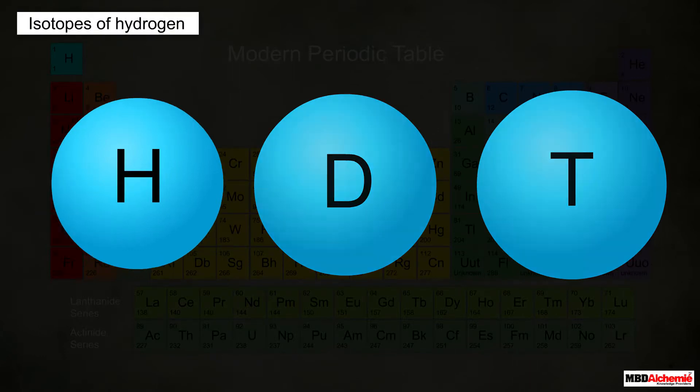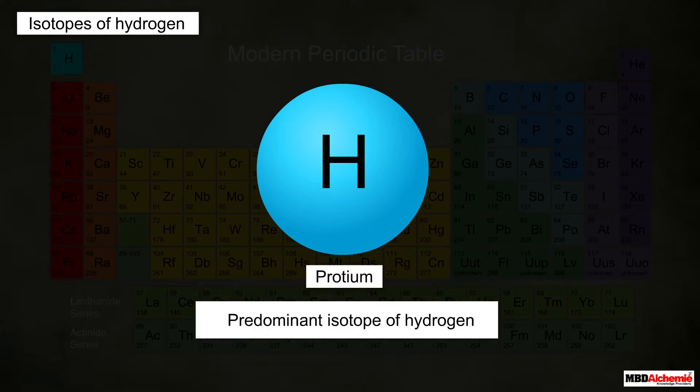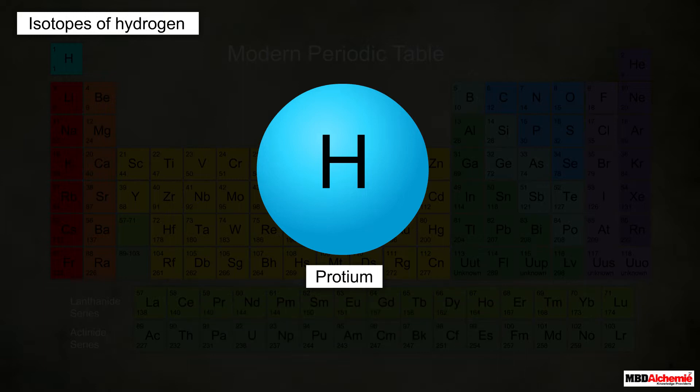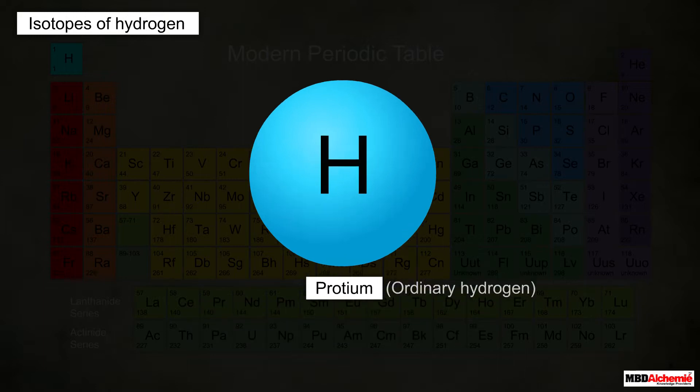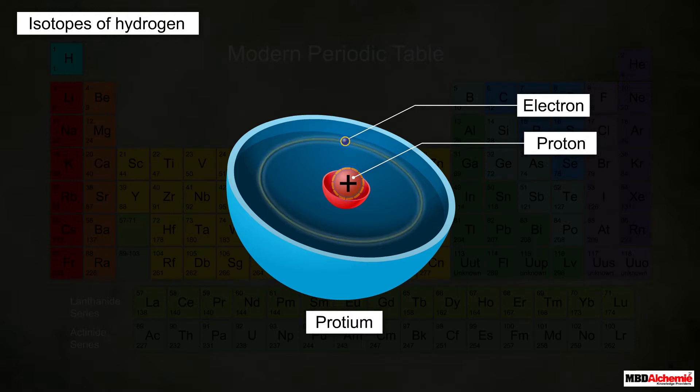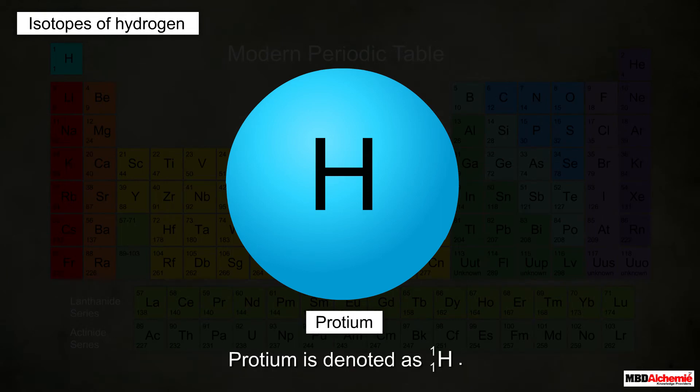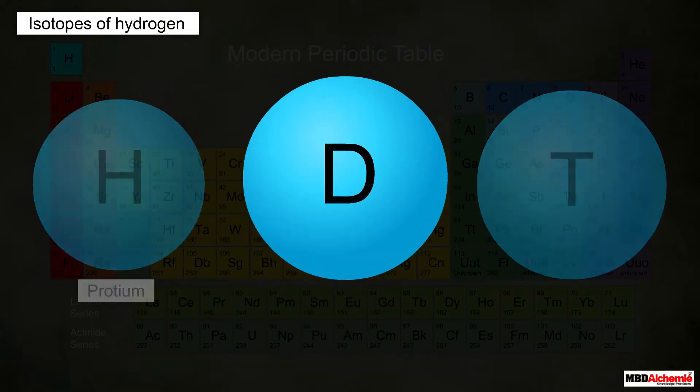Shown here is an atom of protium, which is the predominant isotope of hydrogen. Protium is also called ordinary hydrogen. As you can see, a protium atom has no neutron in the nucleus, so its nucleus has only one proton, and of course there is only one electron in the first shell. So both the atomic number and mass number of protium is one, and it is thus denoted as 1H1.